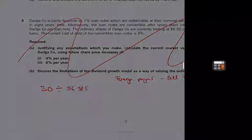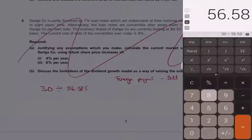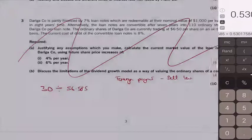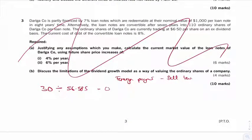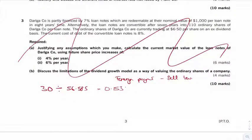So, 30 million divided by 56.585 is 0.53. Okay, so 0.530175 or, okay, so 530,000,